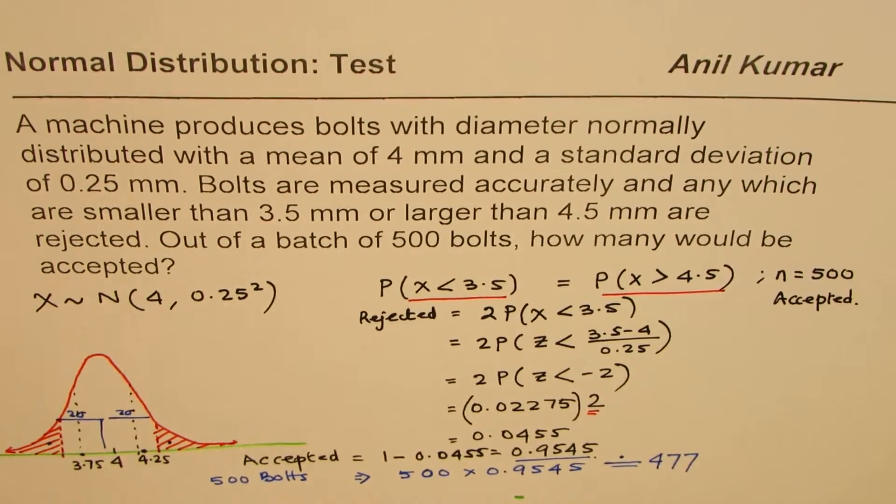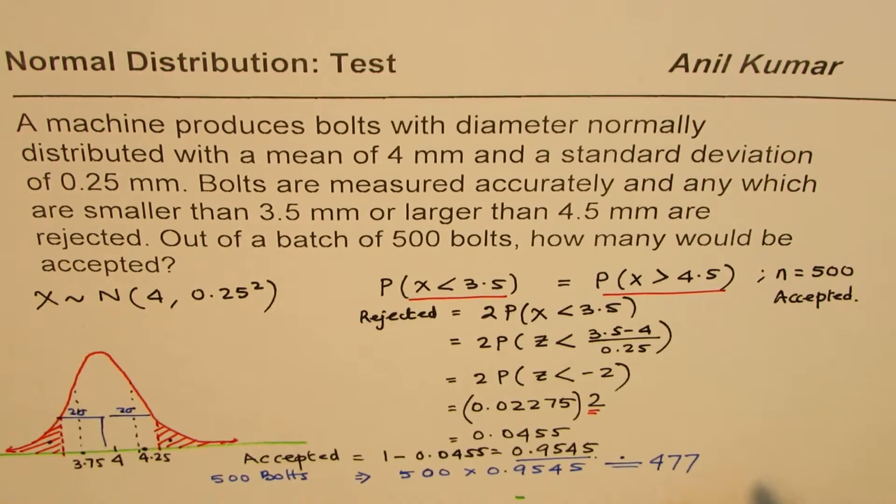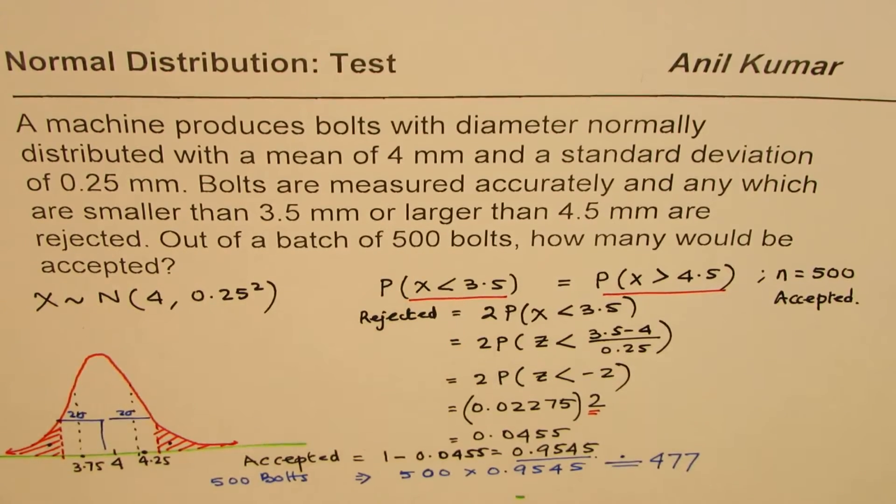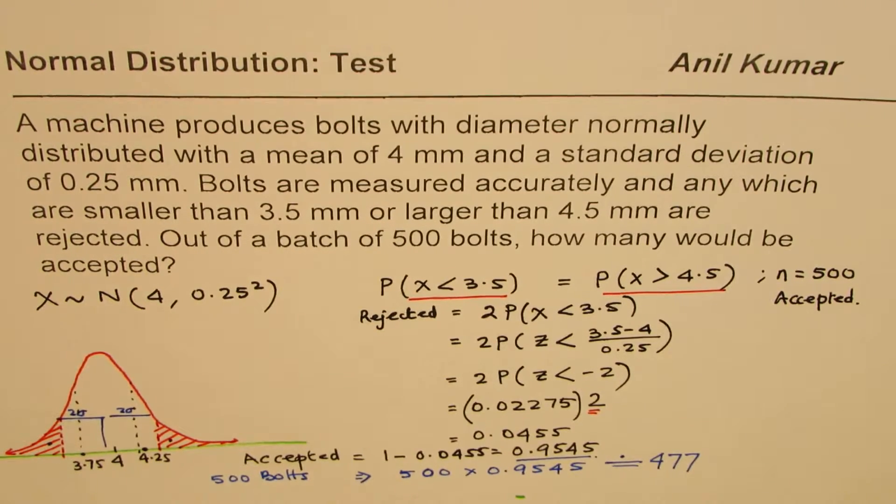So we'll say 477. Probabilities are always estimated, so 477 will be accepted out of 500 in our case. So that is the answer.